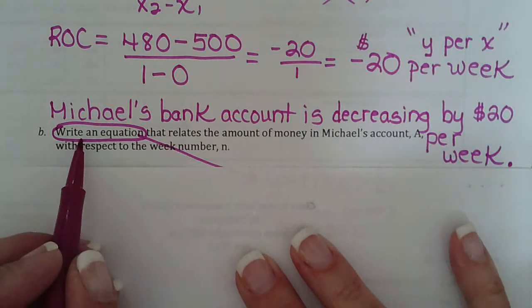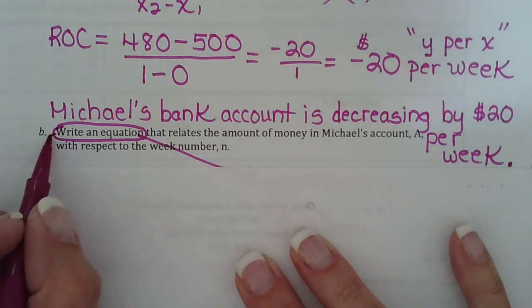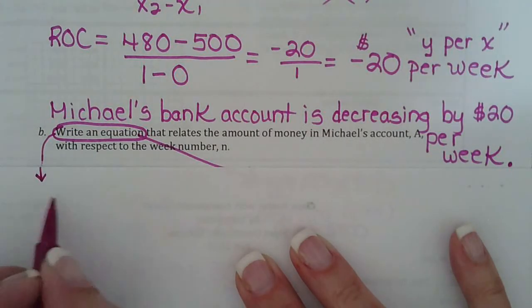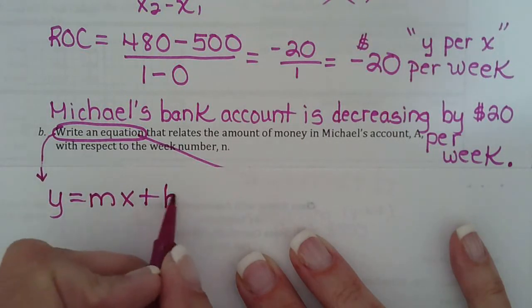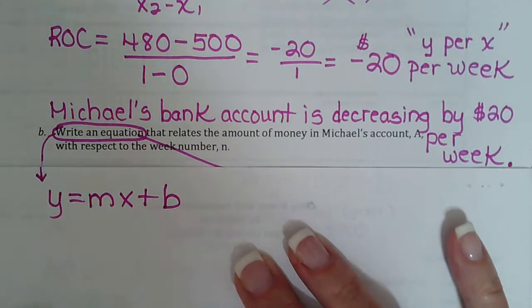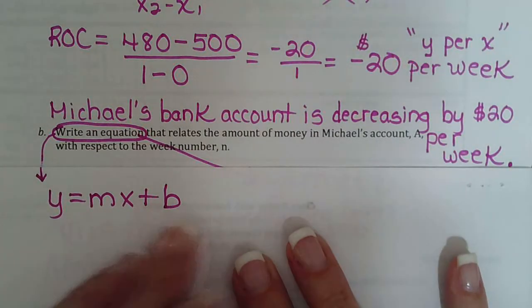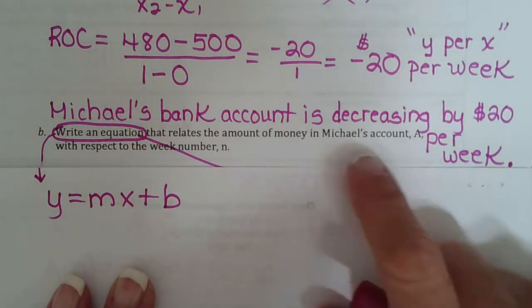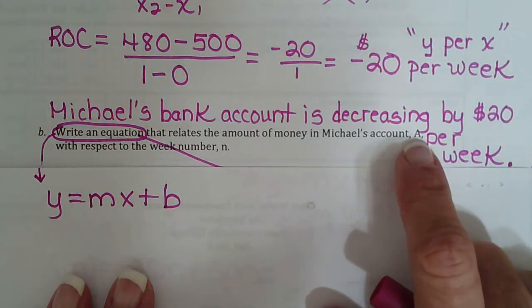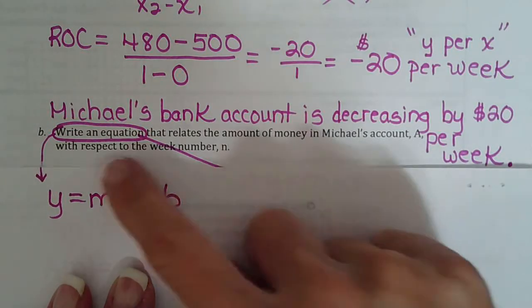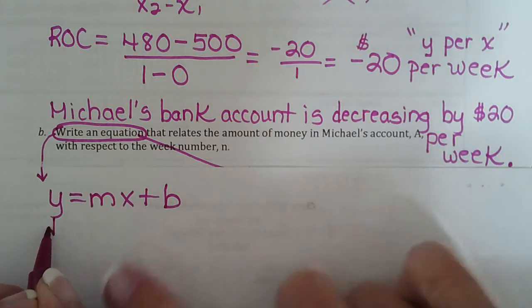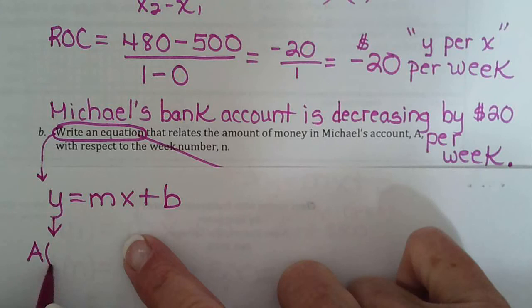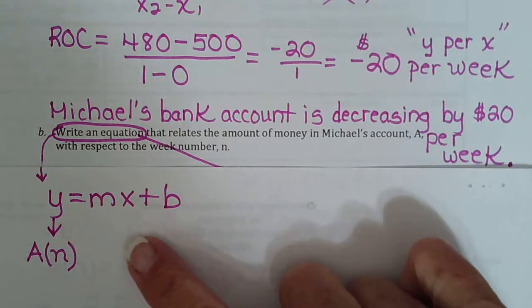So on B it says write an equation. The minute it says write an equation the first thing you should write is y equals mx plus b because that is how we write an equation. And so then we just go down the line and fill in everything we know. So it says account A and I told you that's always the y when it's capitalized with respect to n so that must be the x. So in place of y we can put A with respect to n using our function notation.